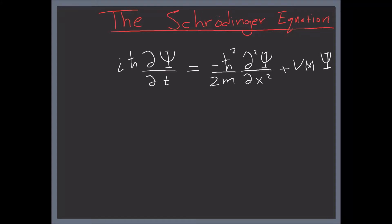We have arrived at the Schrödinger equation. Quantum mechanics is based on the Schrödinger equation — this is the time-dependent Schrödinger equation in one dimension, the x-dimension. Our job in these lectures is to try to solve this equation for different potential functions. We will assume some potential functions based on physical phenomena and try to solve it. But before that, let's tackle the time part of this equation right now.